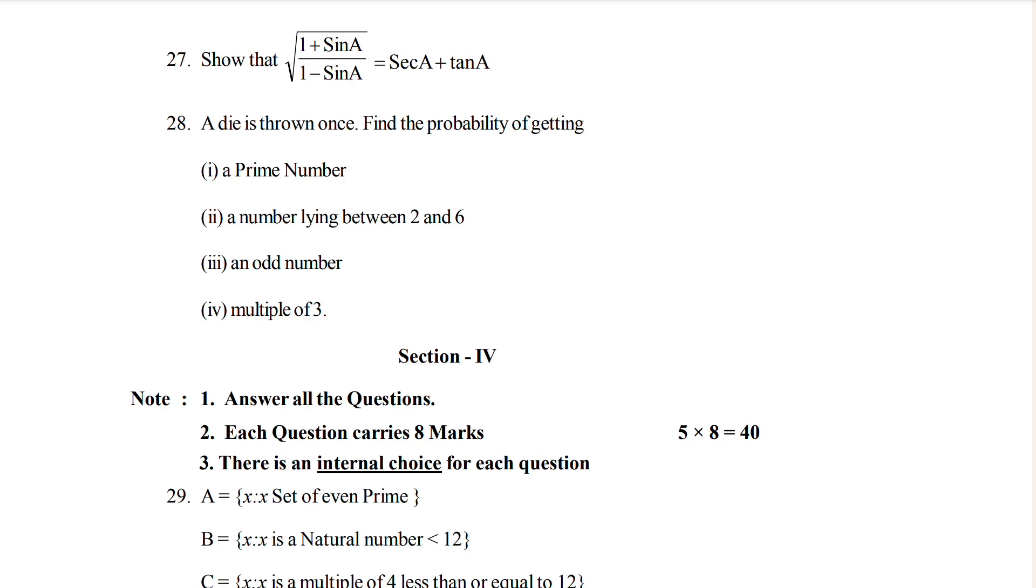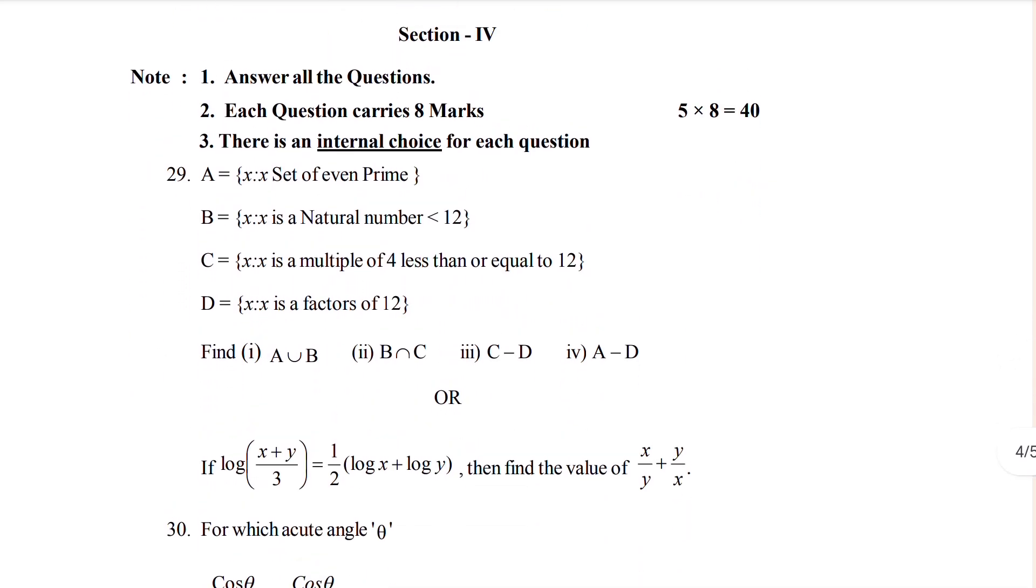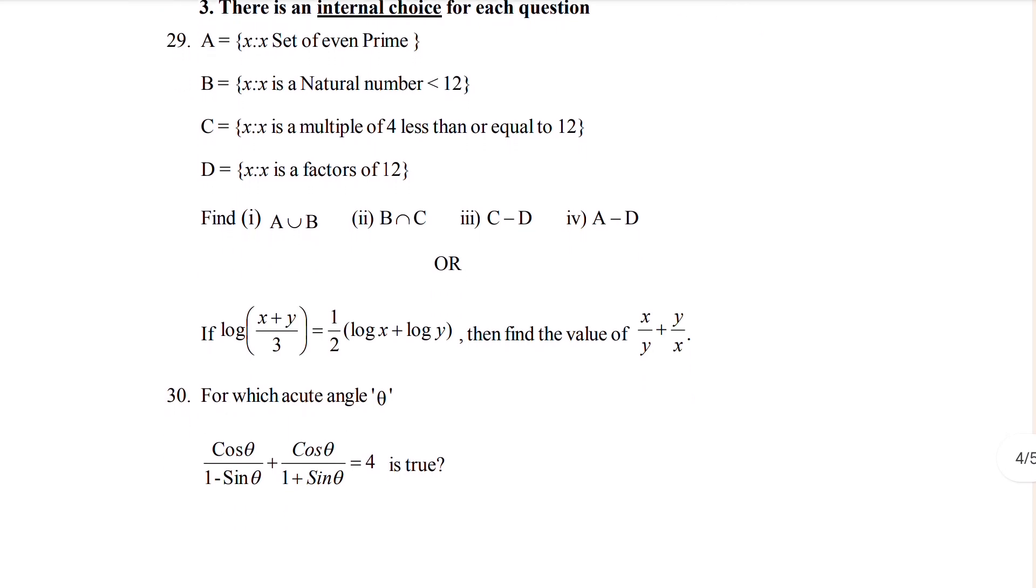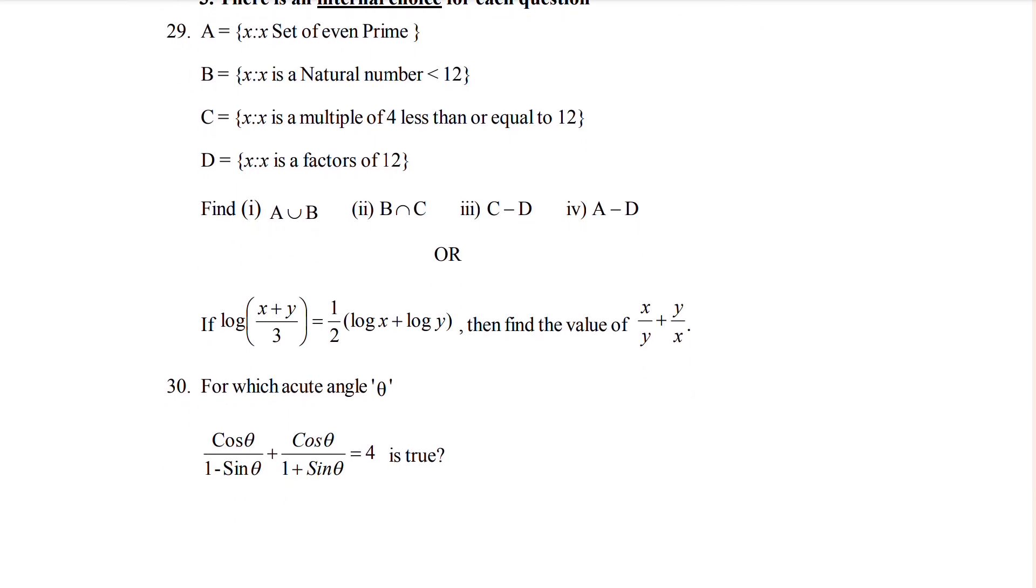If you come to Section 4, see question 29. In question 29 you can see A, B, C, D where you have to find A union B, B intersection C, C minus D, and A minus D.